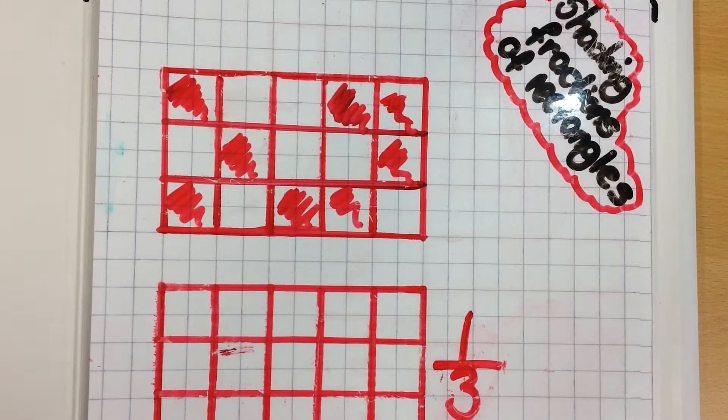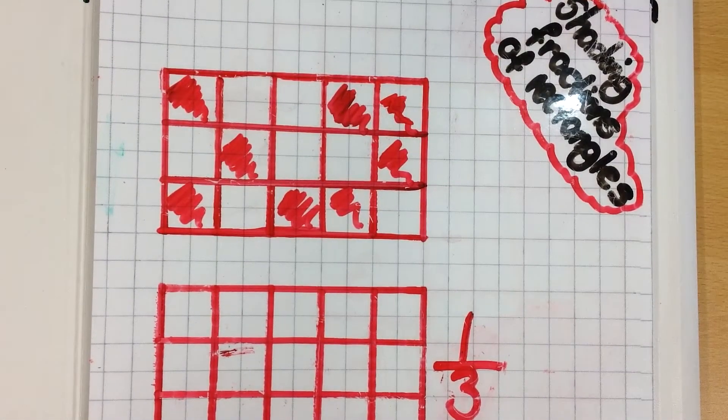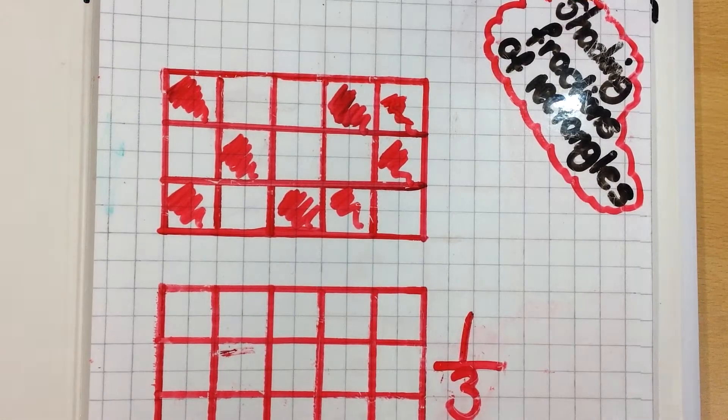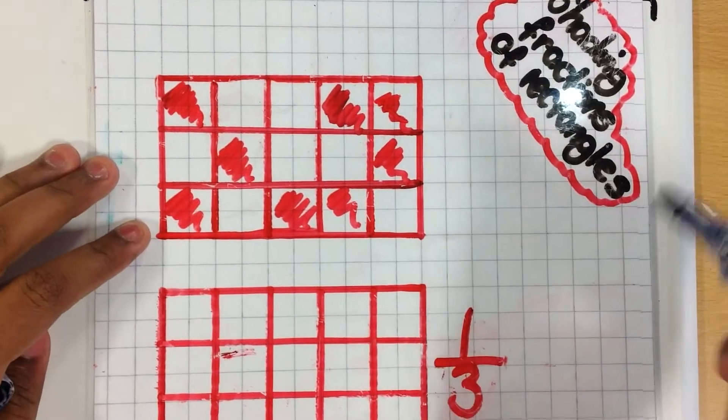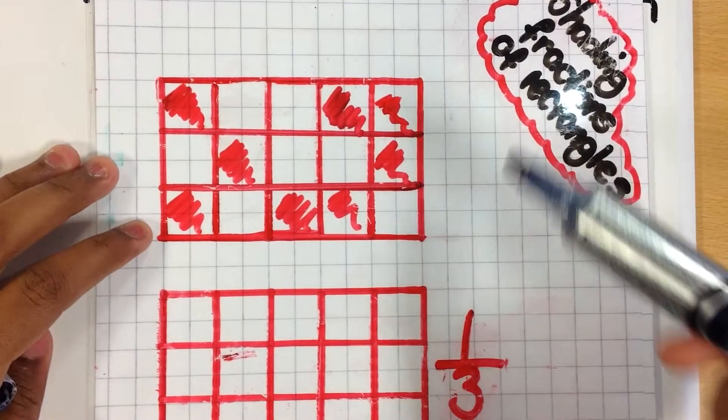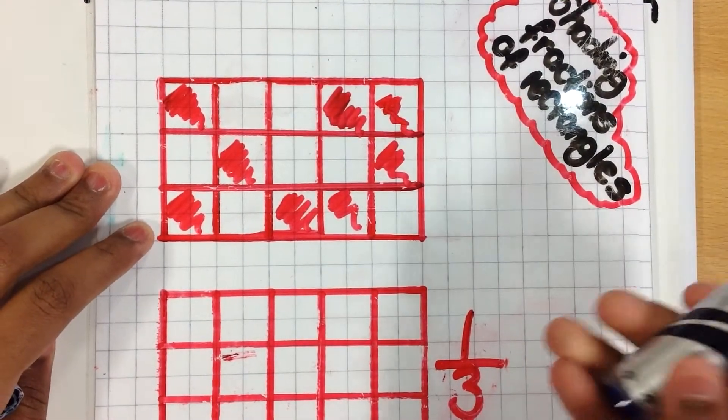Today we will be showing you how to find shading fractions of rectangles. Here's a question. You have to find out how many squares are there. So there's two ways to do it.